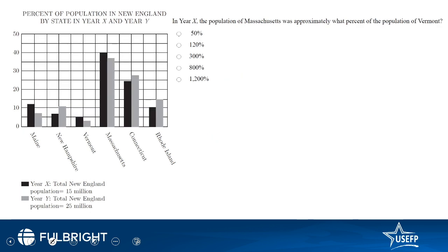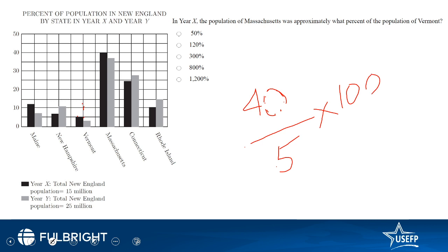In the next part: in year X, the population of Massachusetts was approximately what percent of the population of Vermont? Massachusetts' population in year X was 40% of the total, and Vermont's was 5%. So 40 divided by 5, multiplied by 100, equals 800%. The answer is 800%.